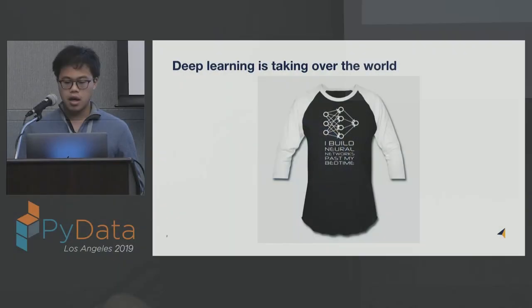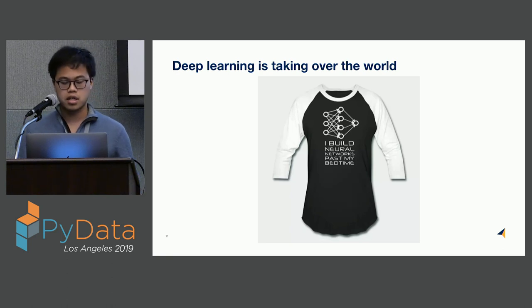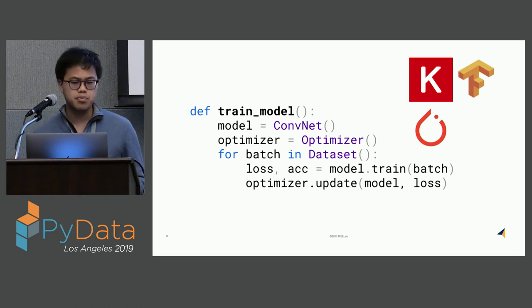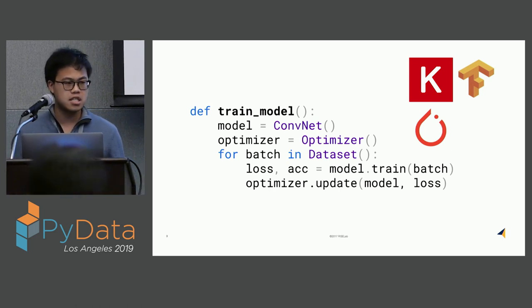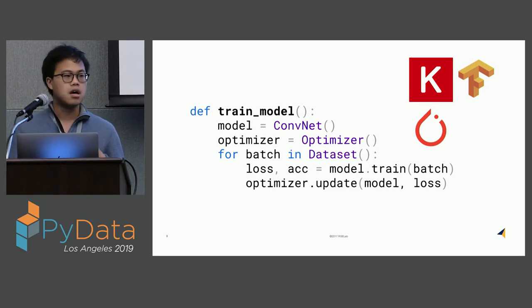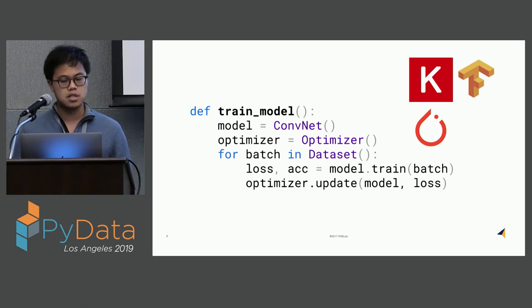I'm going to be talking today about hyperparameter tuning for deep learning workloads. To motivate the premise of this talk — if you've stepped outside your door any time this year, you know that everyone and their dog is excited about deep learning. This can be attributed to recent successes in fields such as language processing, robotics, and computer vision, which has also driven the development of nice, easy, fun-to-use frameworks.